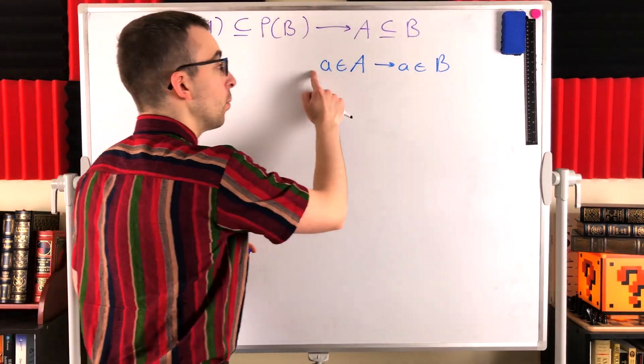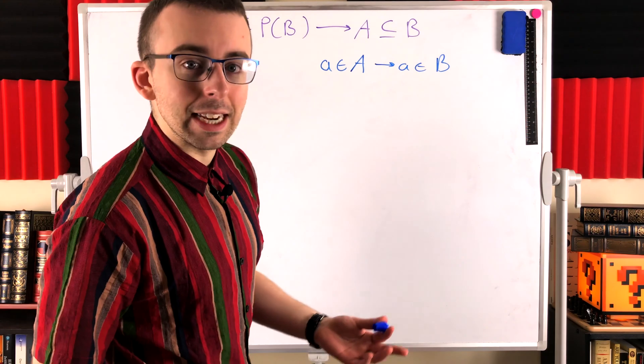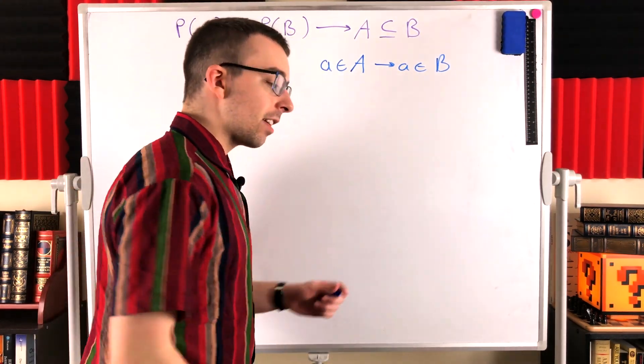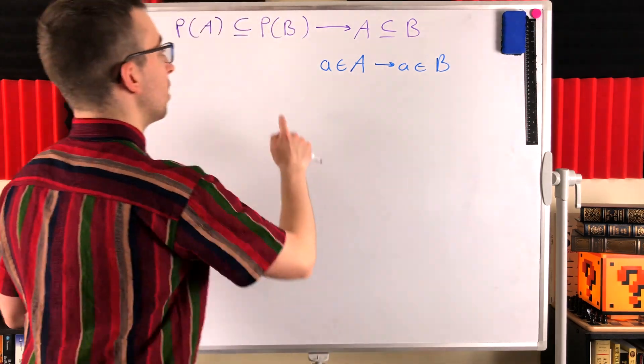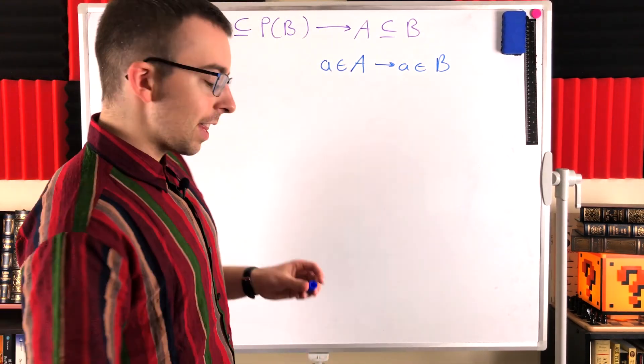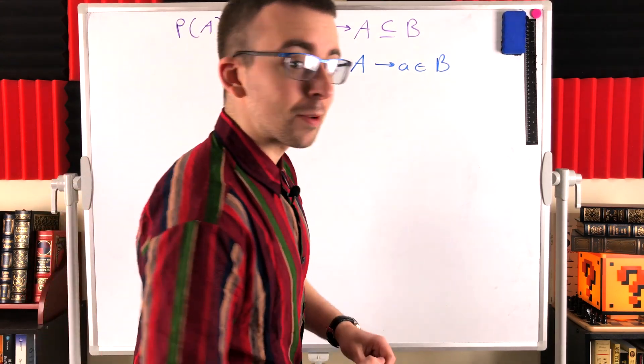So I would start with this: let a be an element of A, little a be an element of the set A. And then you want to try to take steps using what you know to show that this has to be true. That's the basic approach I would take.